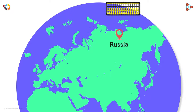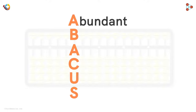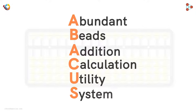But do you know that the word Abacus hides a meaning in itself? It is: A stands for Abundant, B stands for Beats, A stands for Addition, C stands for Calculation, U stands for Utility, and S stands for System.